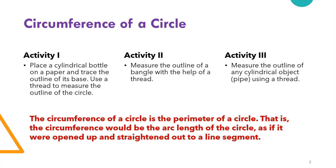And then, when this particular thread is straightened out, it transforms into a line segment. This particular line segment is the circumference and it can be measured against a scale or a ruler.